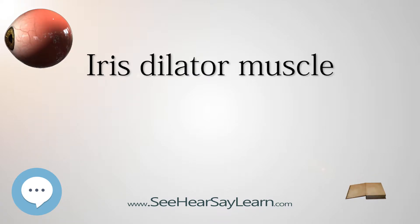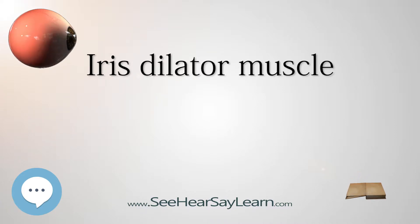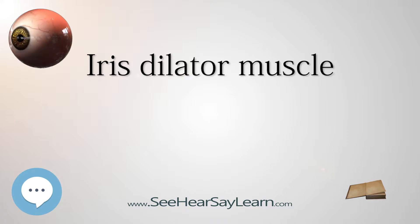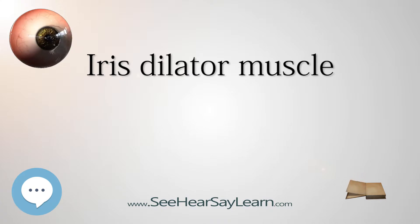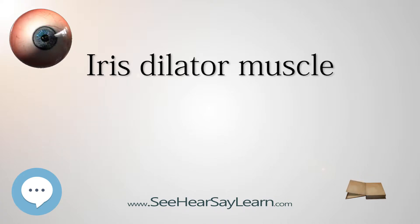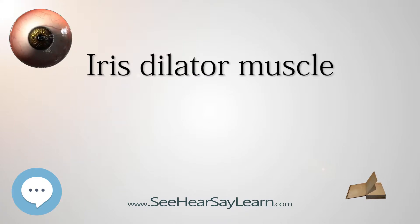It is innervated by the sympathetic system, which acts by releasing noradrenaline, which acts on alpha-1 receptors. Thus, when presented with a threatening stimuli that activates the fight-or-flight response, this innervation contracts the muscle and dilates the iris, thus temporarily letting more light reach the retina.